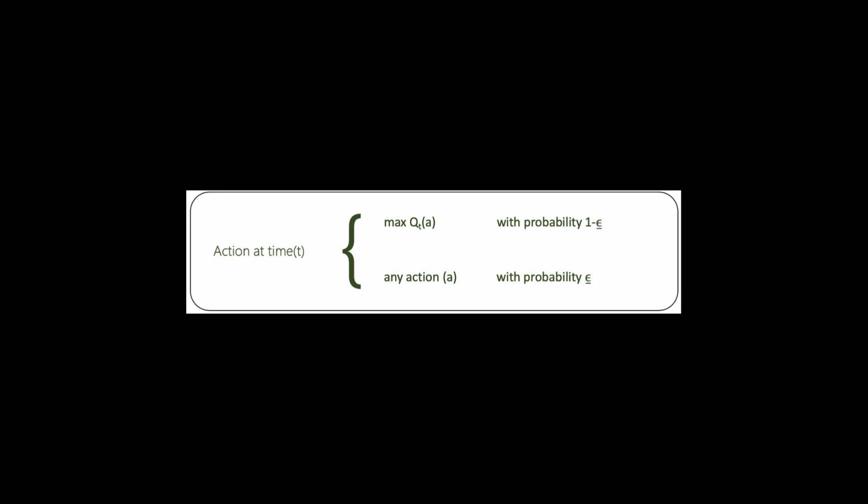There is a problem with the previous approach, and you have guessed it correctly, the value of epsilon. Epsilon is a tunable parameter. If you can tune the value of epsilon correctly, you can get very good results. Otherwise, the results won't be that good.